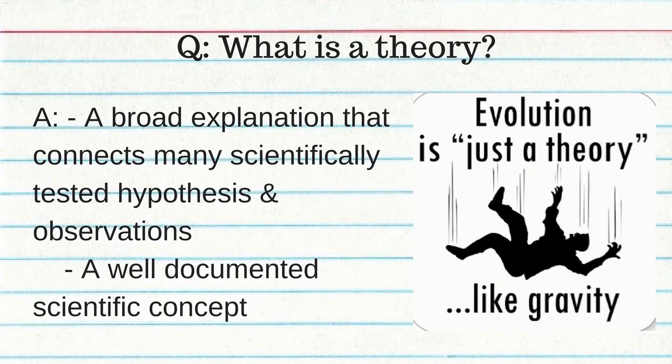A theory in science is a broad explanation that connects many scientifically tested hypotheses and observations — it's a well-documented scientific concept. So yes, evolution is just a theory, but a theory is more than people think — like gravity and cell theory. It's not just someone's idea; it has to be tested and proven.